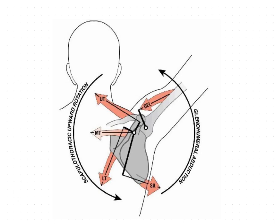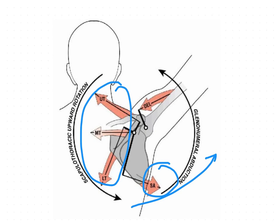Welcome back. Now we are going to see the upward rotators of the scapula. Upward rotation of the scapula is primarily produced by the balance of forces between the trapezius and the serratus anterior. These two muscles produce the upward rotation of the scapula through their attachments with the clavicle as well as the scapula.